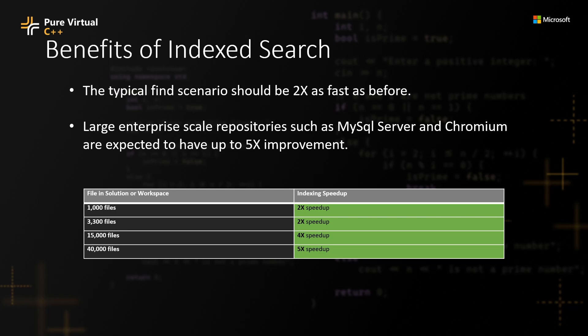You may be wondering: what if I'm not a 95th percentile user? Is my usage really indicative of a 95th percentile user? The typical find scenario should be two times as fast as before, so you don't necessarily have to be an enterprise user to experience benefit from this feature. And if you are an enterprise scale user with an enterprise scale repository, MySQL Server, Chromium, and other similarly sized solutions are expected to have up to a 5x cumulative improvement.